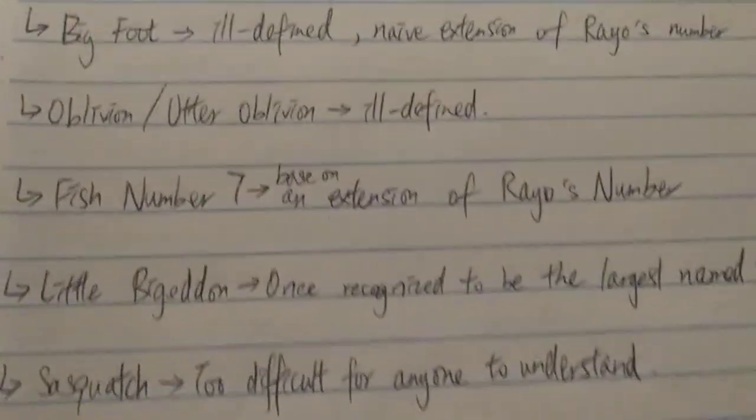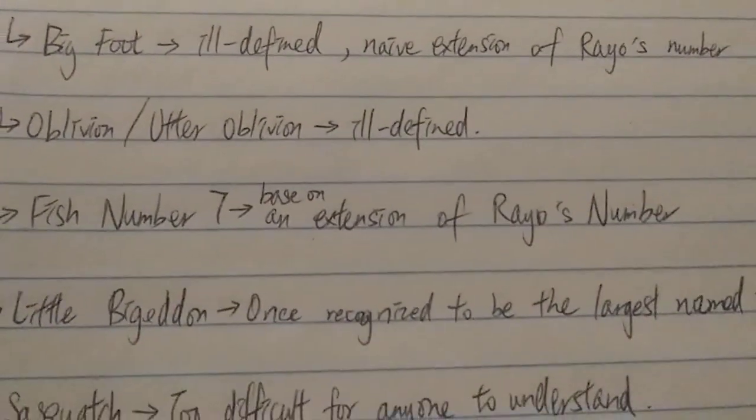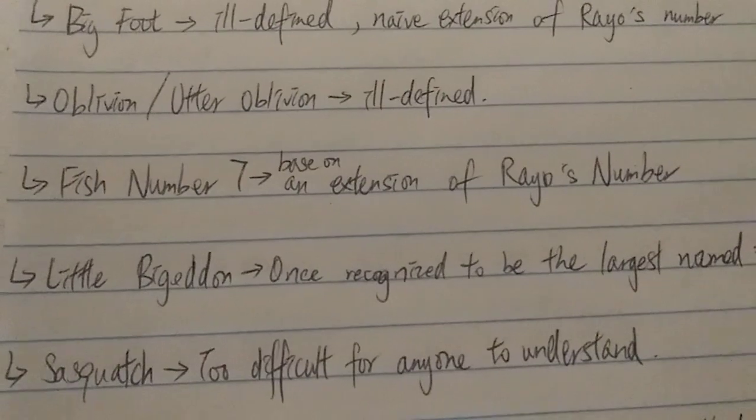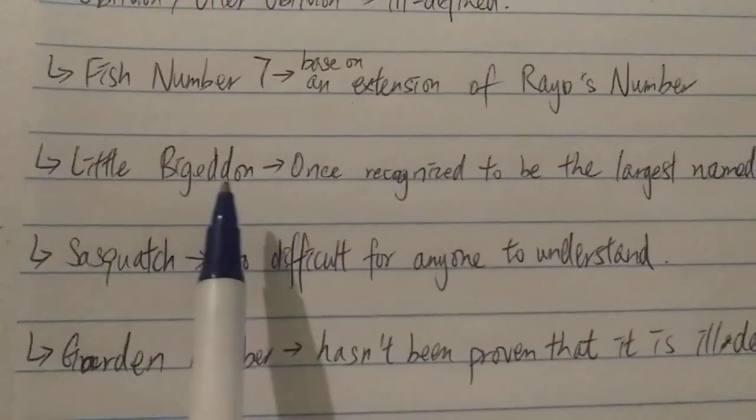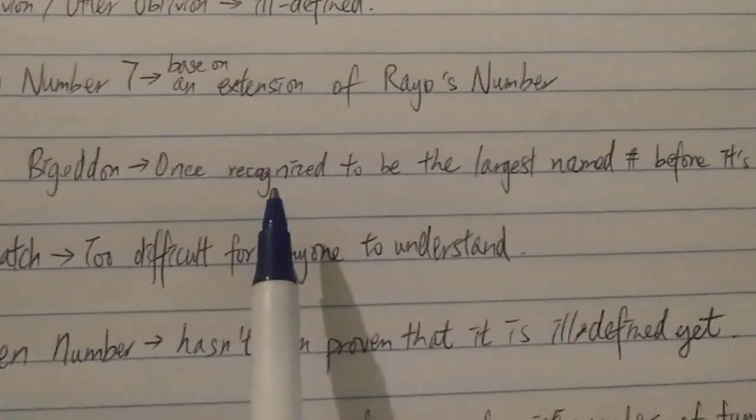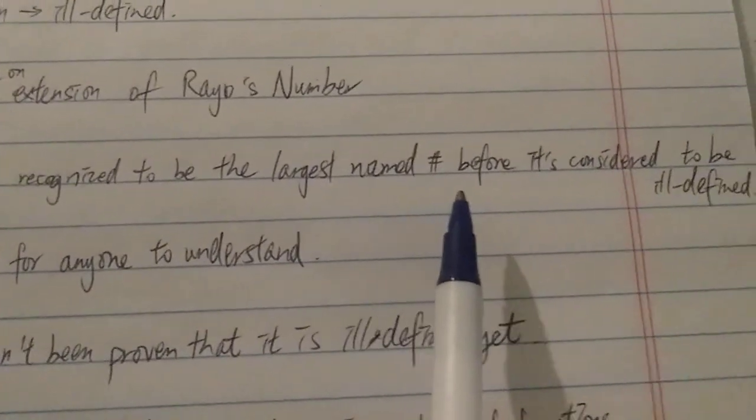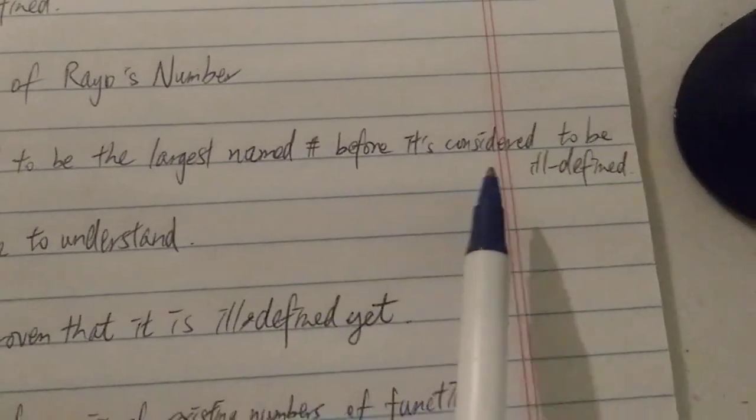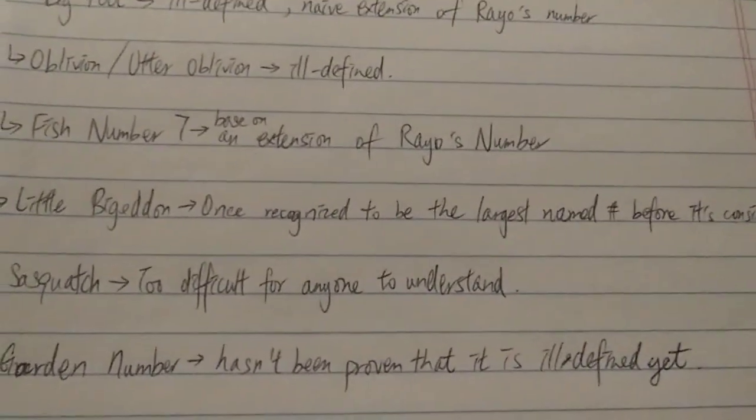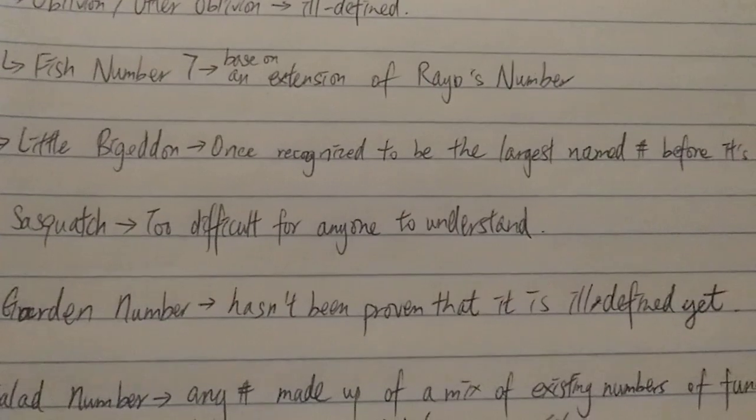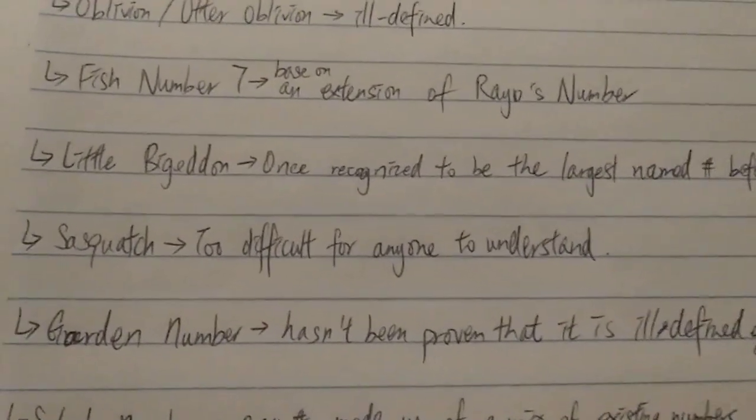If it's an ill-defined or naive extension, generally it's not quite accepted. Next, you have Little Bigotin. It was once recognized to be the largest named number before it's considered to be ill-defined. So again, most of these numbers here are ill-defined, later to be found to be ill-defined.